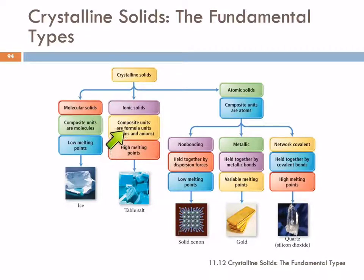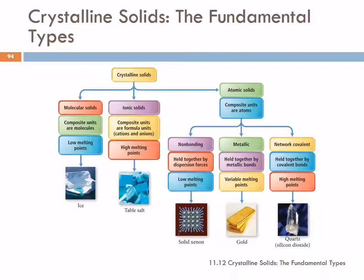If the units in the structure are ions, then we call that an ionic solid. Ionic solids are held together by ionic bonds, which are very, very strong. In essence, any crystal of an ionic compound is one giant molecule.